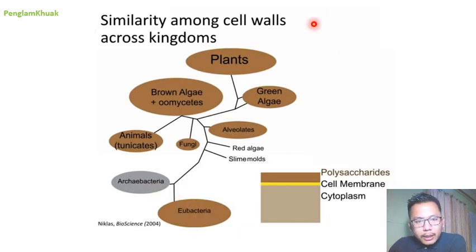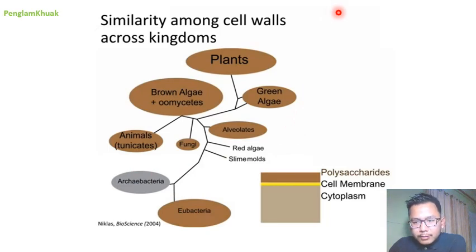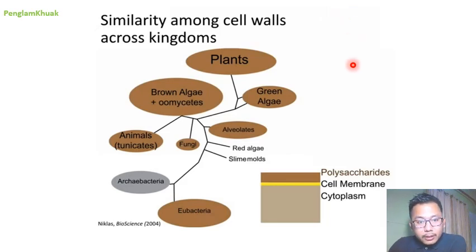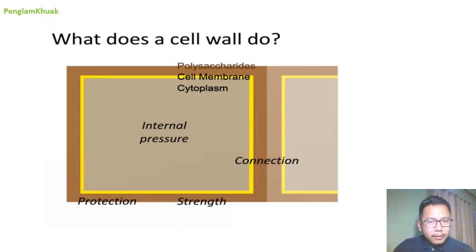Archaebacteria were originally discovered and described in extreme environments such as hydrothermal vents and terrestrial hot springs. They were also found in diverse environments — highly saline places where large amounts of salt are present, in high acidity, and in anaerobic environments — meaning in the absence of oxygen. Because of that, their cell wall can tolerate those extreme environment conditions.